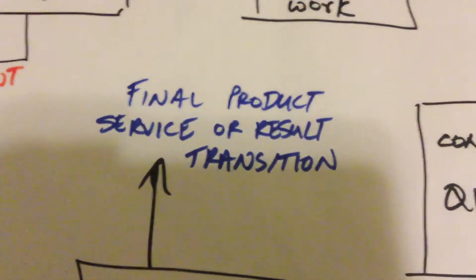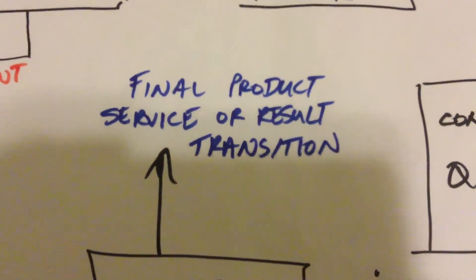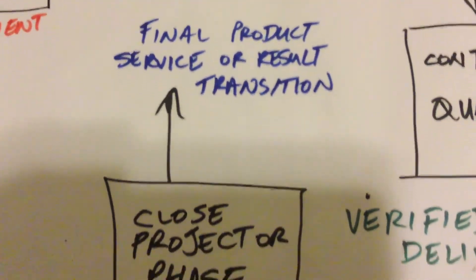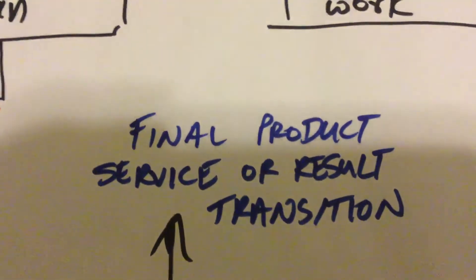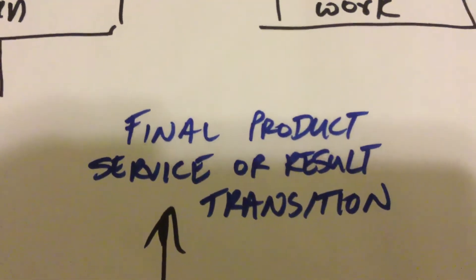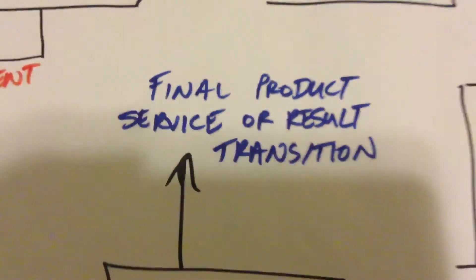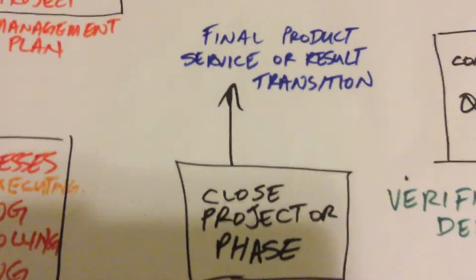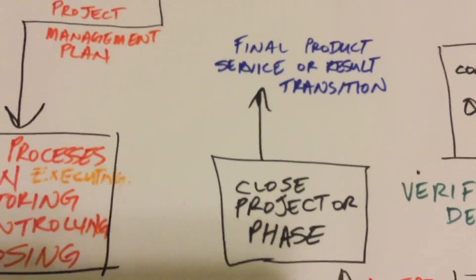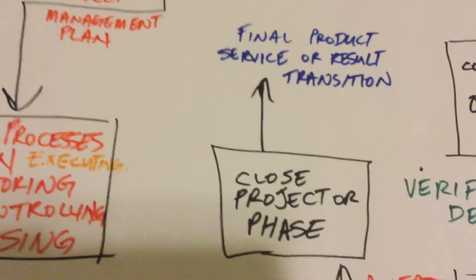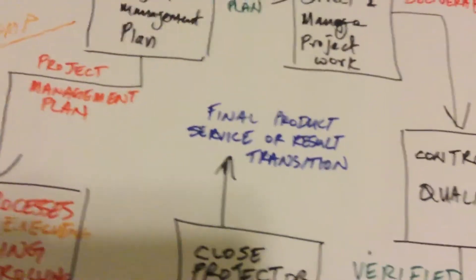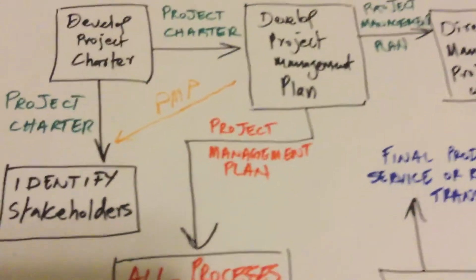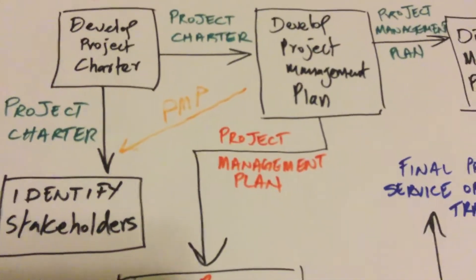Perhaps you get to the end of the project and it was terminated. In that case, you will not get a final product, service, or result transition, but you will likely get a final report. So you can see there are lots of loops of interactions here.